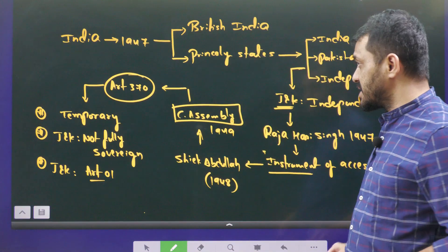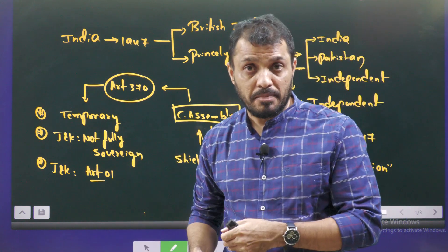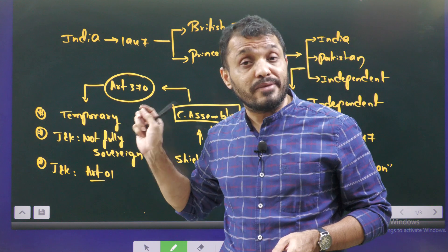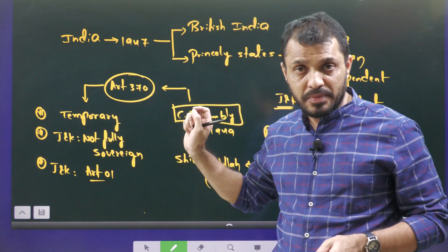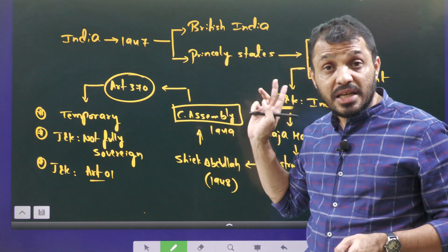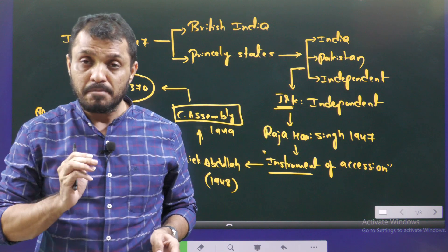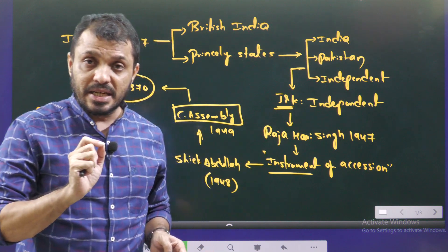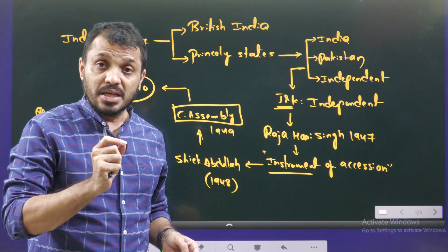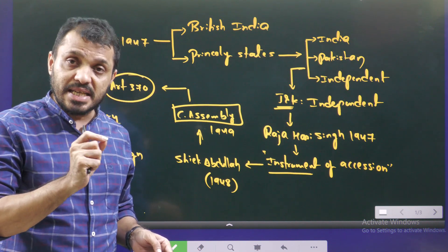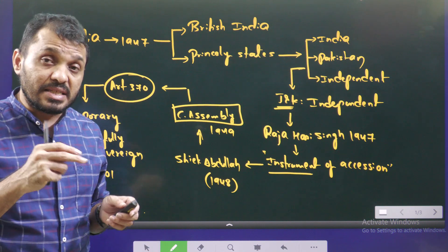When the British left India, the country consisted of two parts: princely states and British India. Princely states were given three options — they could remain independent, join India, or join Pakistan. The Jammu & Kashmir kingdom had a peculiar condition: the majority of its people belonged to the Islamic religion while the ruler, Raja Hari Singh, was Hindu. He initially decided to remain as an independent state.